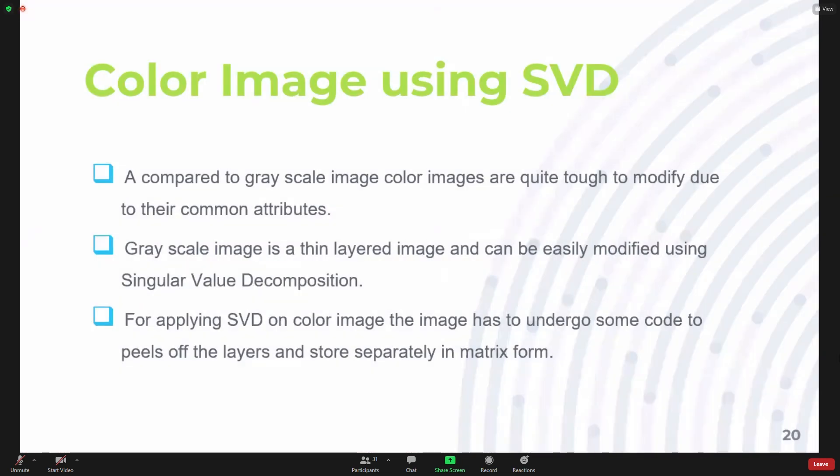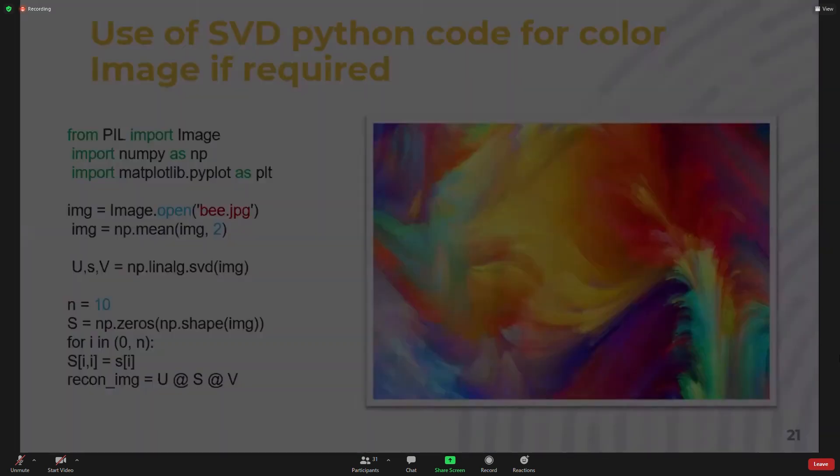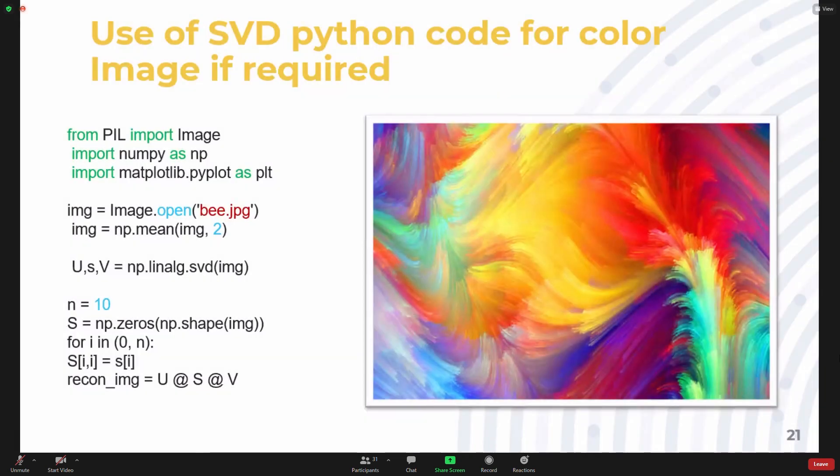Color images can also undergo SVD. However, it is tougher compared to a grayscale image, because a grayscale image is a thin layered image and can be easily modified using singular value decomposition. However, a color image contains color information which is a complex attribute. For this purpose, we have to apply some code and peel off these layers to convert the image into a matrix. Once the image is converted into a matrix, we apply SVD as we have seen in grayscale image processing.